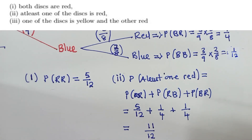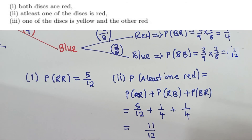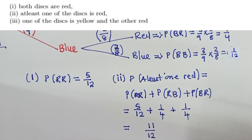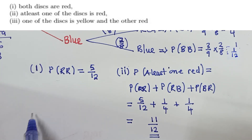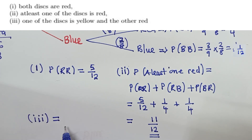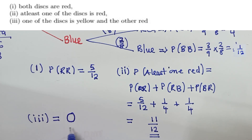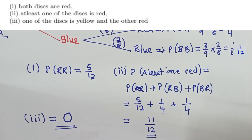We go to the last question. They are saying one of the disks is yellow and the other one is red, and we want to find that probability. Looking at the question that we have, can we see any yellow mentioned? No. So that means we have zero — the answer is zero. Thank you so much for watching. Don't forget to subscribe to my YouTube channel. This has been C-Chambe Jacob.